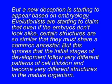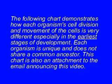A new deception is starting to appear based on embryology. Evolutionists are starting to claim that even if the embryos don't look alike, certain structures are so similar that they must share a common ancestor. But this ignores that at the initial stages, development follows very different patterns of cell division and becomes very different structures in mature organisms. A chart demonstrating how each organism's cell division and cell movement is very different — especially in the earliest stages — shows that each organism is unique and does not share a common ancestor.